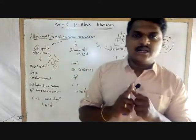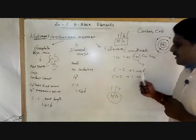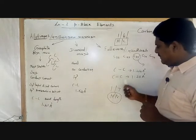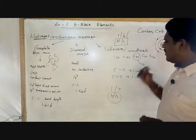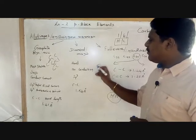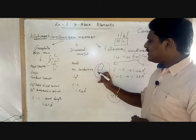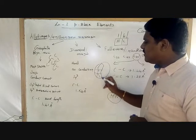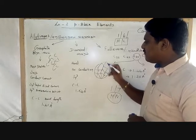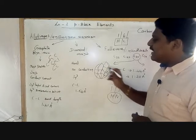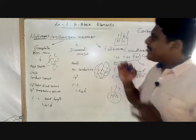In fullerene, carbon forms single and different types of bonds. The bond lengths are 1.44 Ångströms and 1.38 Ångströms. The main fullerene discussed is C60.